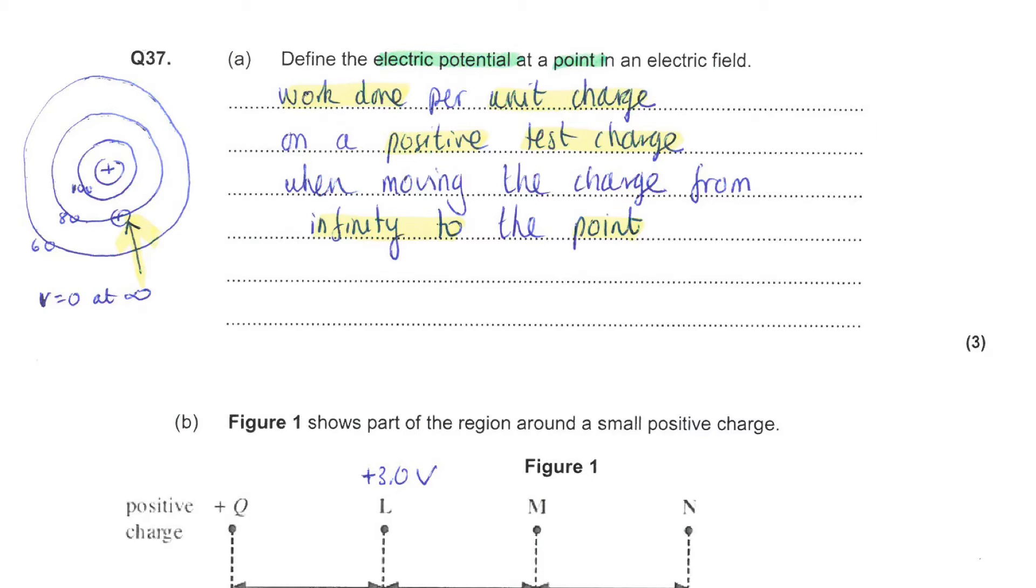The positive test charge would in effect be falling towards the negative central charge and its potential would be decreasing from zero down to increasingly negative values.